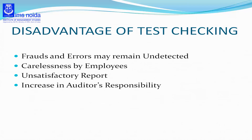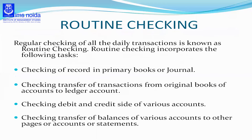The third disadvantage is an unsatisfactory report. After the examination, the report submitted by the auditor is not of much benefit to the organization, since the auditor's opinion is based on examination of only a part of the accounts, and hence the report will not be satisfactory. The last disadvantage is an increase in the auditor's responsibility — even though test checking reduces the auditor's work, his responsibility is increased since he is also held responsible for all transactions not examined by him.